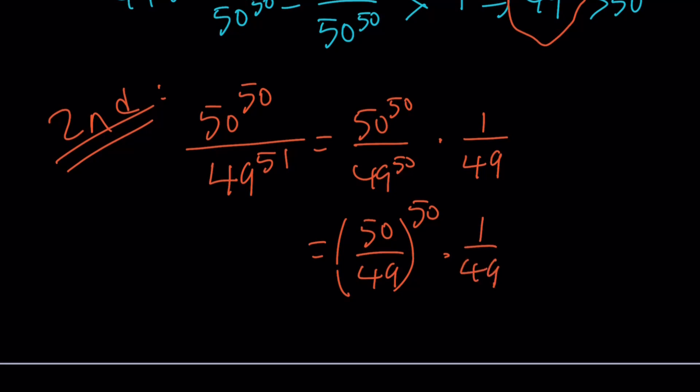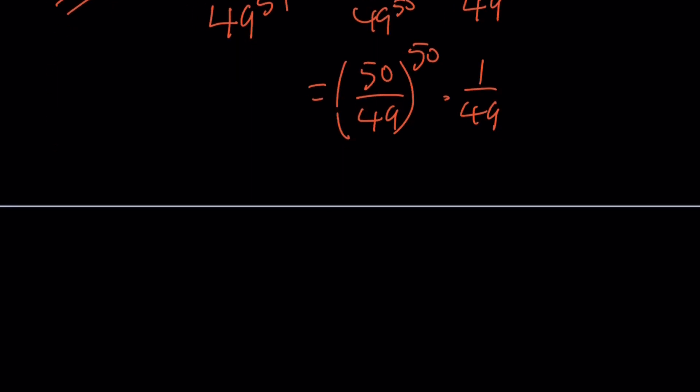Write this as 50 over 49 to the power 50 times 1 over 49. Since 50 over 49 is greater than 1, I can write it as 1 plus 1 over 49 to the power 49. But it's the 50th power, so we can split one of the powers. I'll write this times 1 plus 1 over 49 to the power 1, and then times 1 over 49.